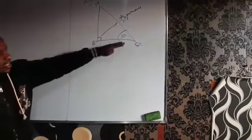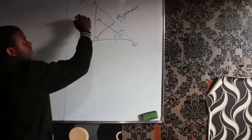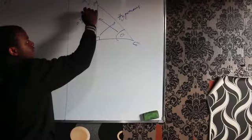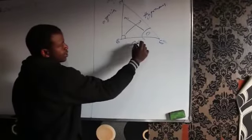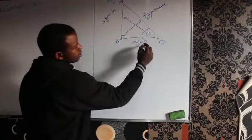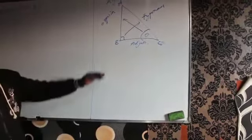Then the side which is opposite to angle theta, this side is referred to as the opposite. And the side that remains here is the adjacent.